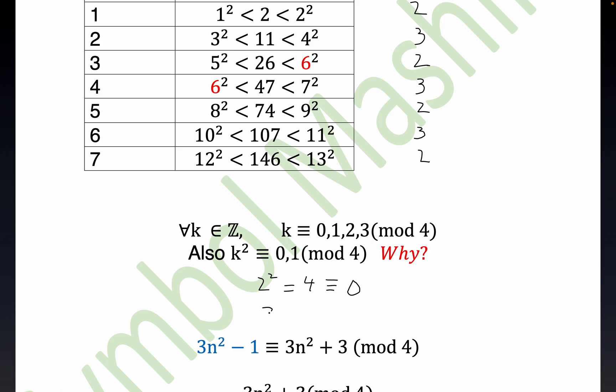3 squared is equal to 9, but 9 leaves a remainder of 1 when you divide it by 4, so that's congruent to 1. So that's why this result is true. Any square, any square at all, has to either leave a remainder of 0 or 1 upon division by 4, and this is the reason why.